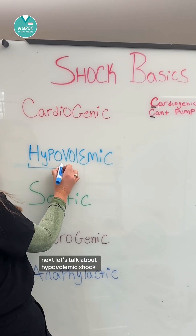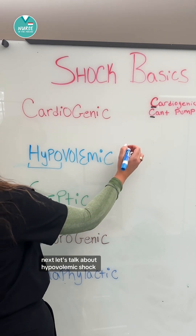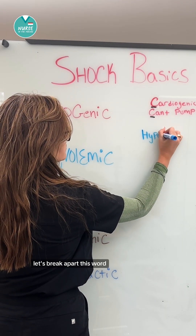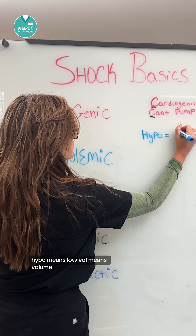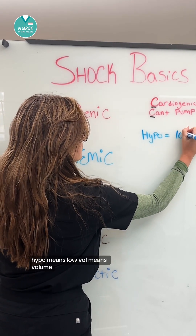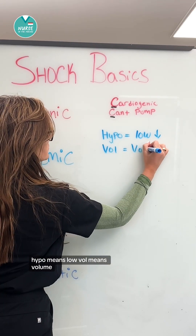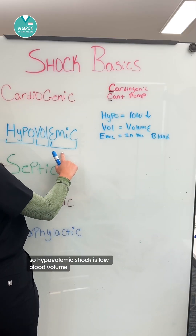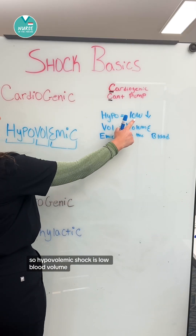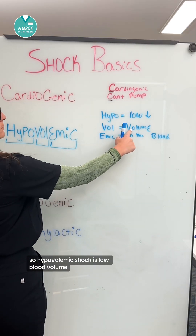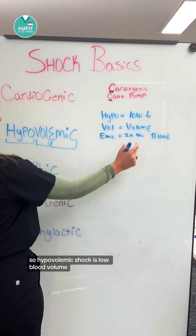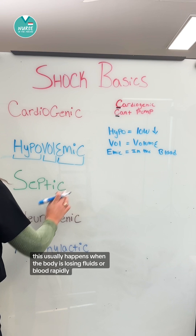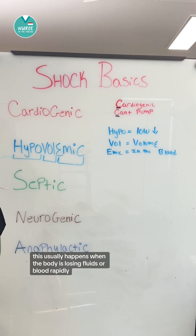Next, let's talk about hypovolemic shock. Using our medical terminology, let's break apart this word. Hypo means low, vol means volume, and emic means in the blood. So hypovolemic shock is low blood volume. This usually happens when the body is losing fluids or blood rapidly.